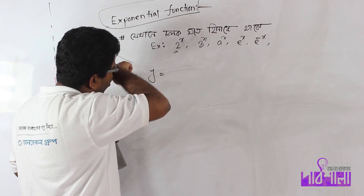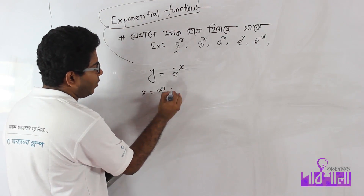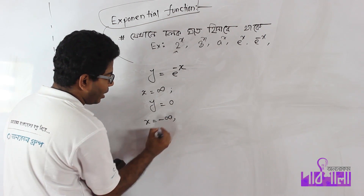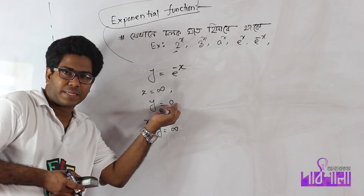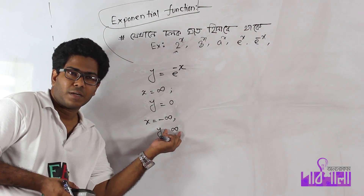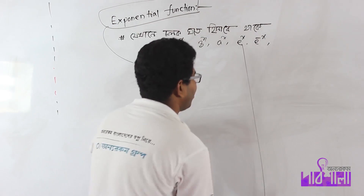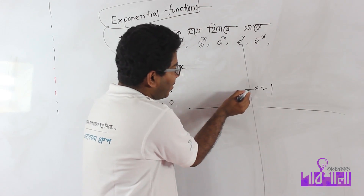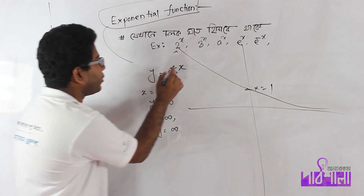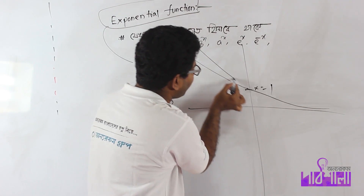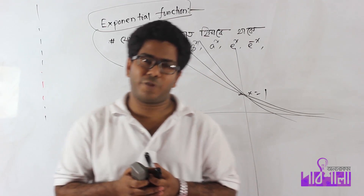Nothing but this. The graph will be the same. When x equals infinity, y equals 0. When x equals minus infinity, y equals infinity. This is the case. The graph will be 0. Then y equals 0. So if we use e to the power negative x, we can see it is still negative.